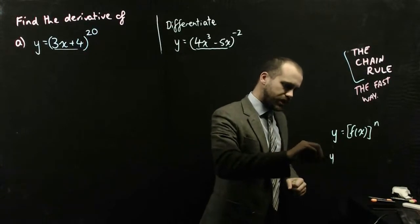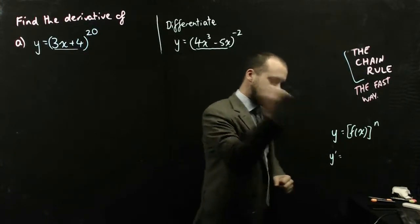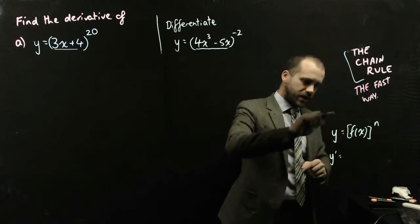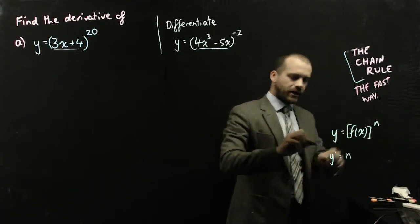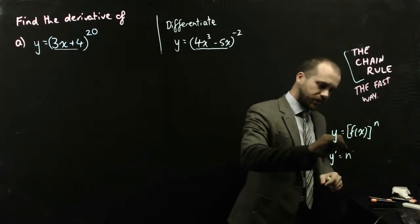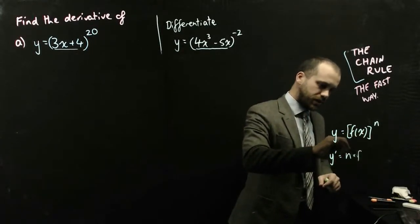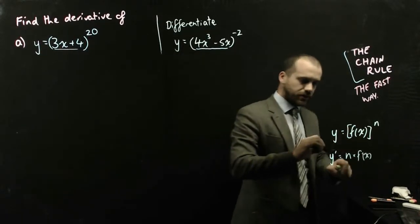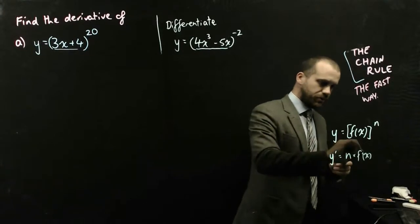Then my rule states that y dash is going to be equal to, now you've got to be careful here, we've got to bring the n out the front, and then we've got to take the derivative of f of x, so that's going to be n times f dash of x, and then we've got to keep our f of x that we started with.